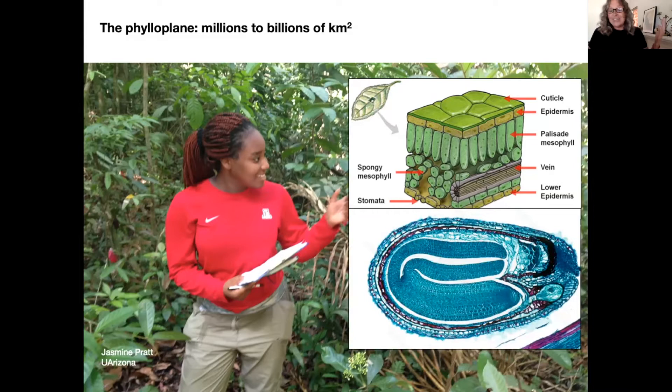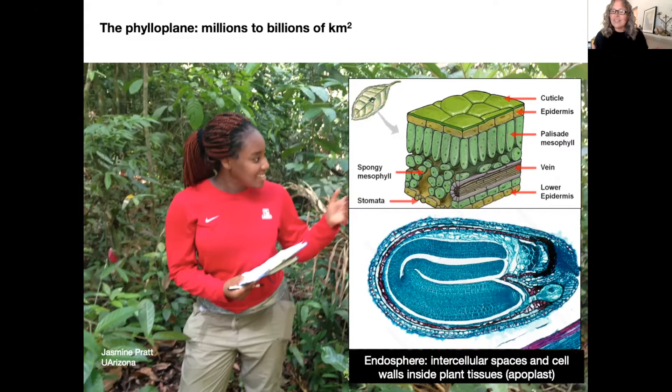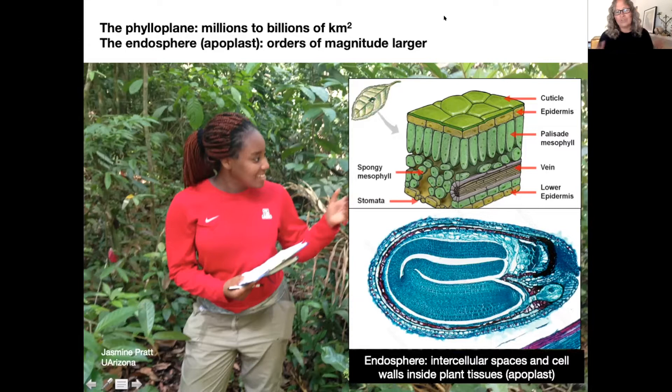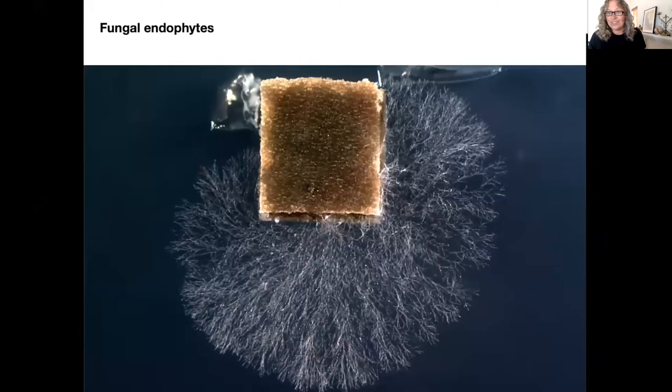This is a reality we see when we dive into a seed as well. Many cell surfaces together create what we refer to as the endosphere or the apoplast. It's in this environment that we find the vast majority of fungal endophytes — a habitat orders of magnitude larger than what we can see when we walk into a forest and look only at leaf surfaces.